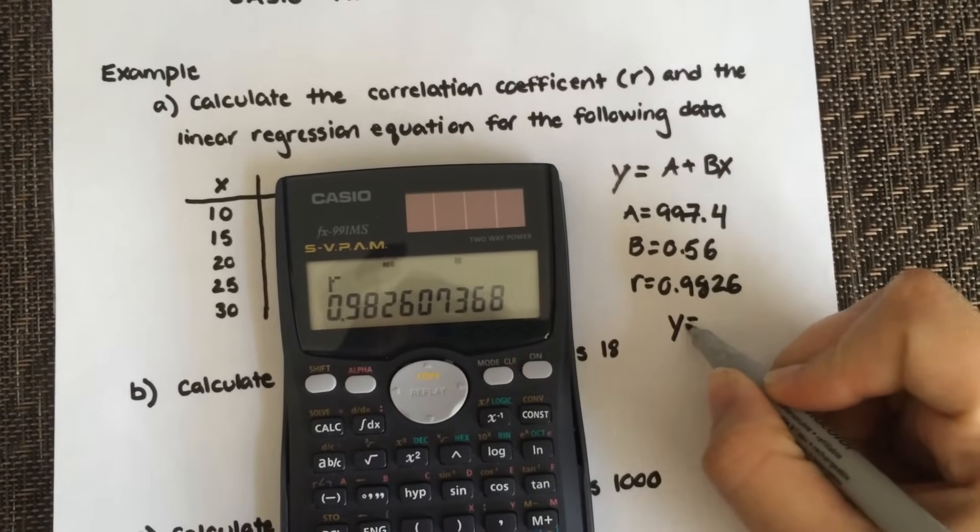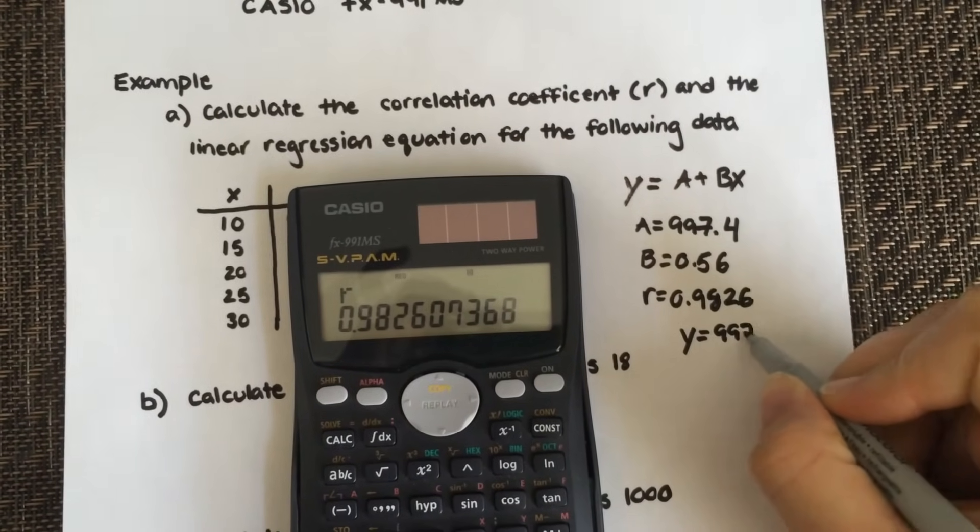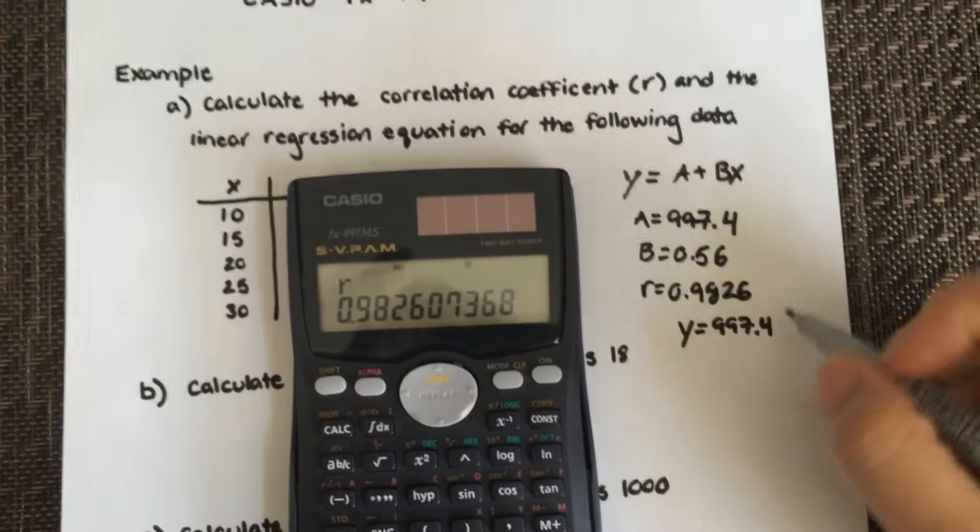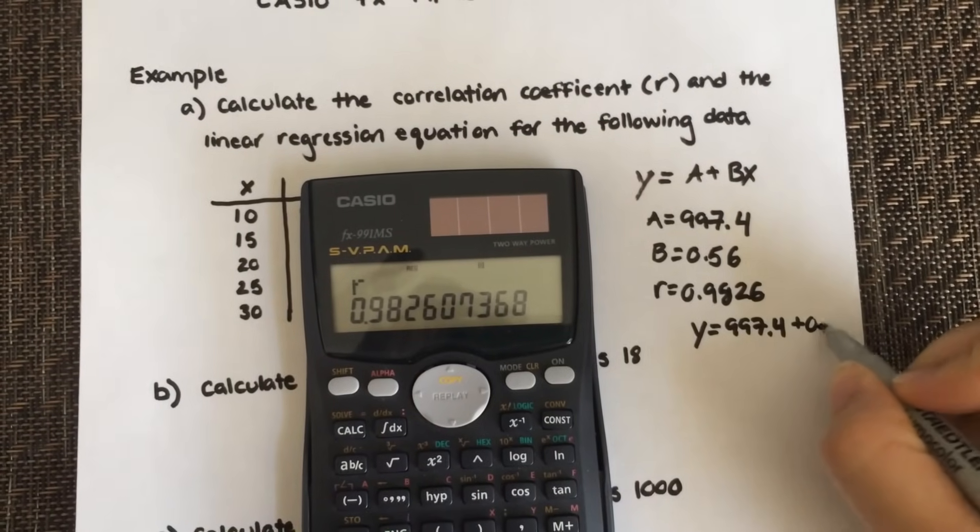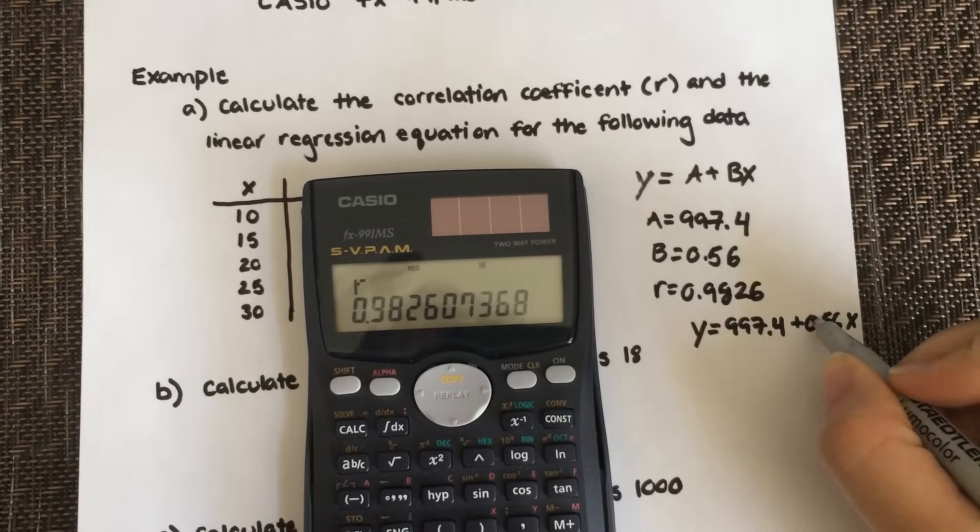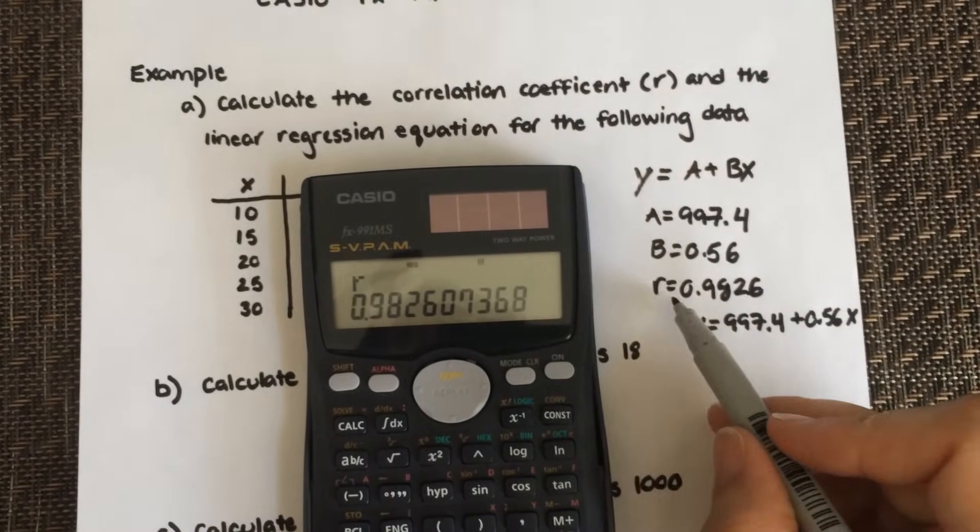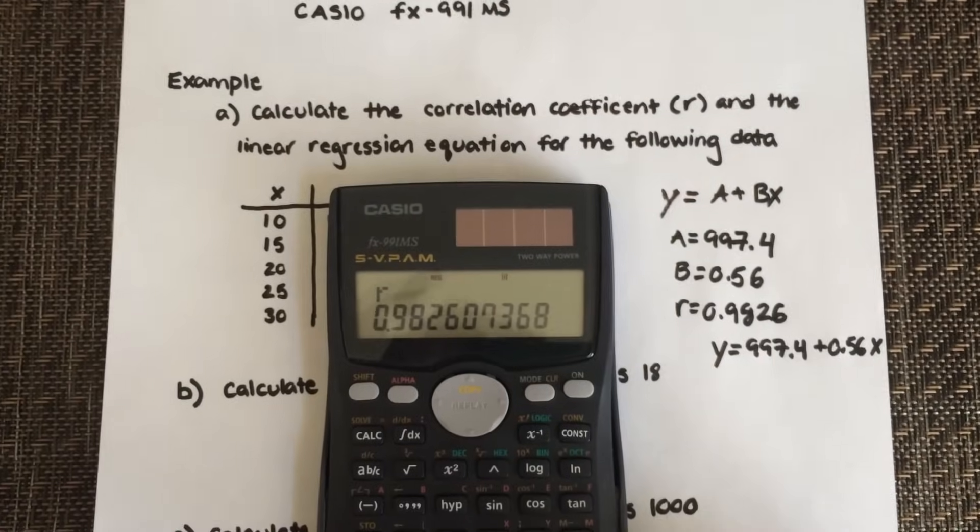So there's your answer. So your equation would be y equals 997.4, my y-intercept, plus 0.56x, 0.56 being my slope, and the r value you have right there, your correlation coefficient.